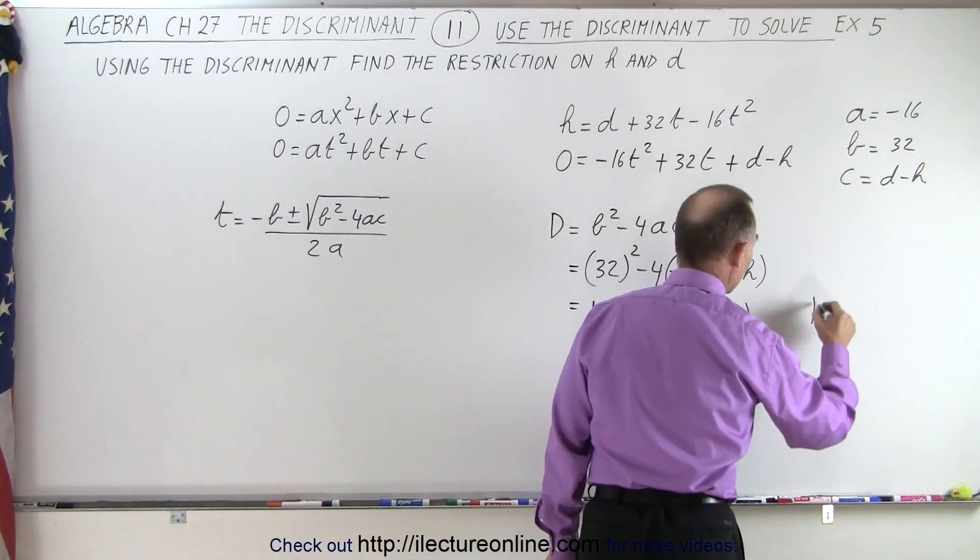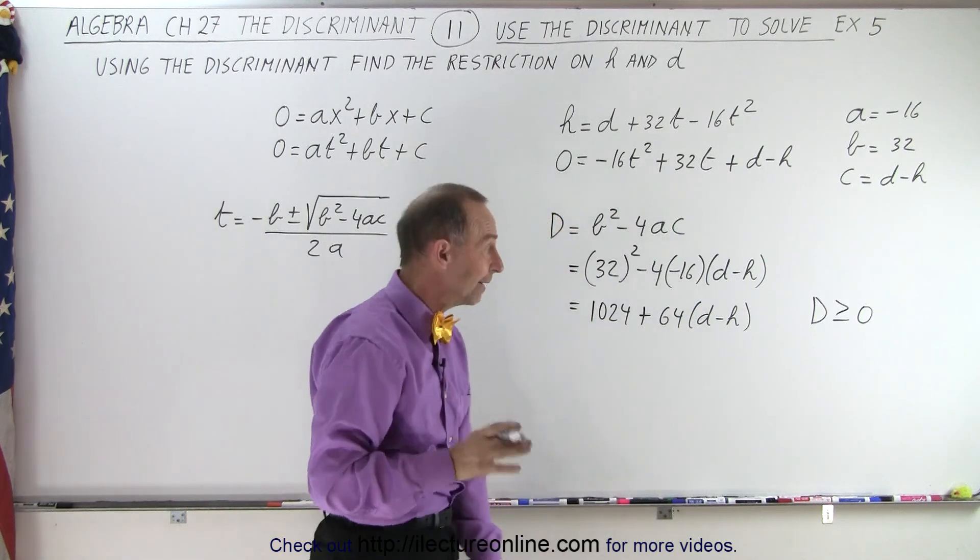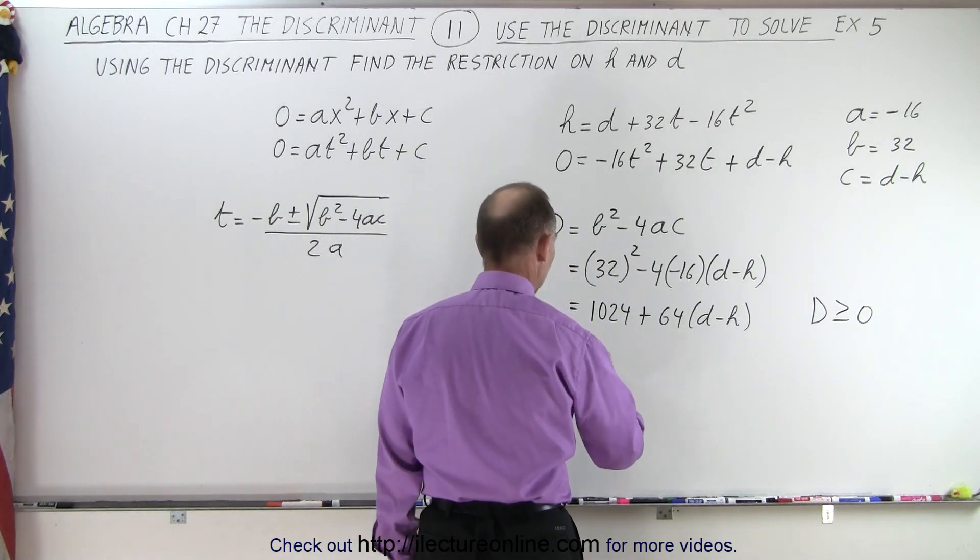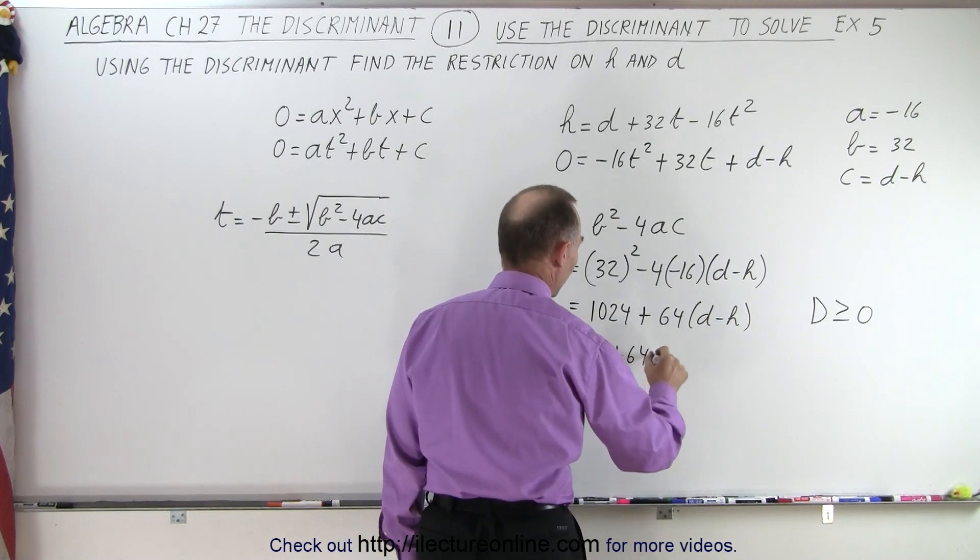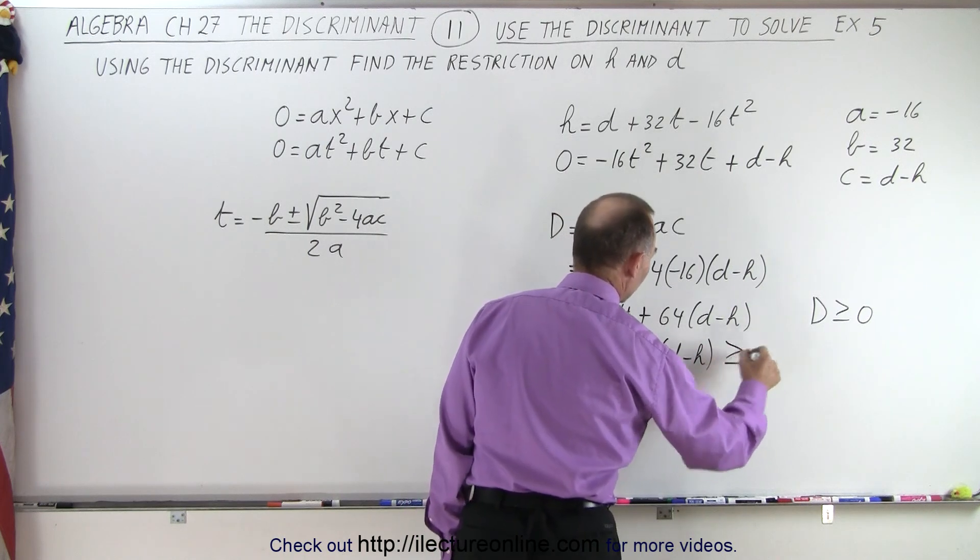We know that d must be greater than or equal to 0, which means that this must be greater than or equal to 0 as well. So we know that 1024 plus 64 times d minus h should be greater than or equal to 0.